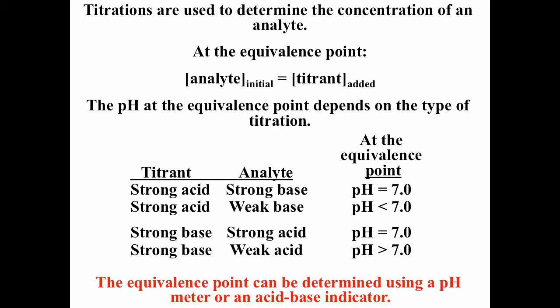For acid-base indicators, there are two ways of determining when you've reached the equivalence point: you can use a pH meter or an acid-base indicator. The pH of the equivalence point depends on the type of titration. If you're titrating a strong base with a strong acid, the equivalence point pH should be 7. If you're titrating a weak base with a strong acid, the pH will be less than 7. If you're titrating a weak acid with a strong base, the pH will be greater than 7, so you may need a different type of acid-base indicator.